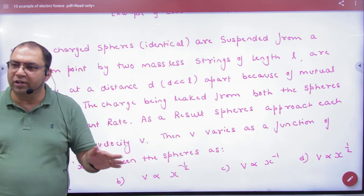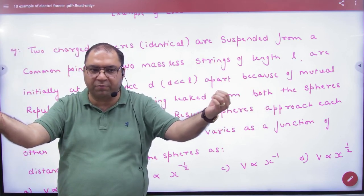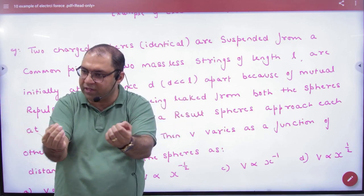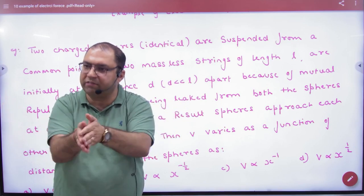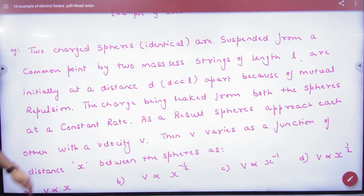The charge has started leaking, so electrostatic force of repulsion has decreased. So these particles have started approaching. D becomes less and less - variable distance. When the whole charge goes, they will go back. And the charge leak is at constant rate.